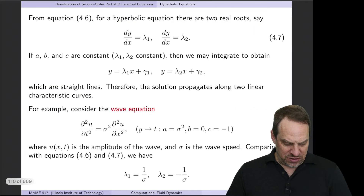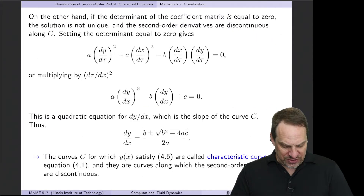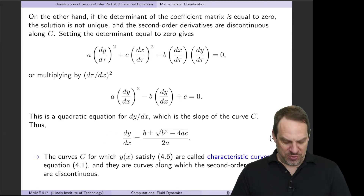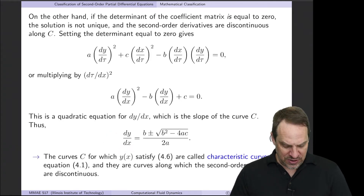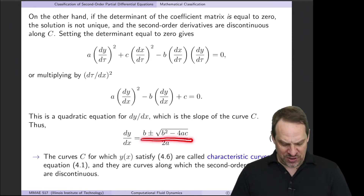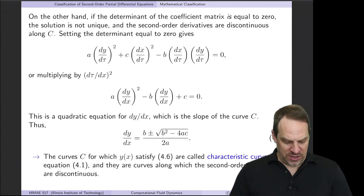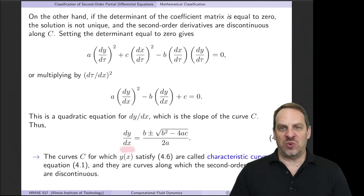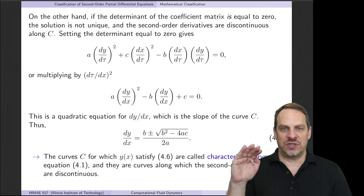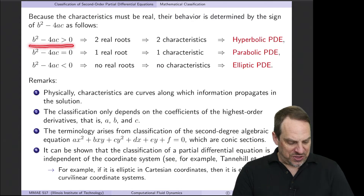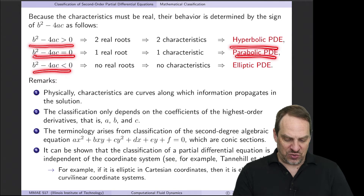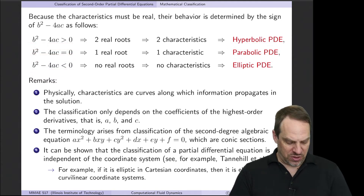Let's start with hyperbolic equations. Going back to the expression from the last video, we got the solution for the slope dy/dx as (b ± √(b²−4ac)) / 2a. That's the quadratic formula—the solution for the slope dy/dx of one of these characteristics. The nature of b²−4ac determines the type of equation: whether it's hyperbolic, parabolic, or elliptic.